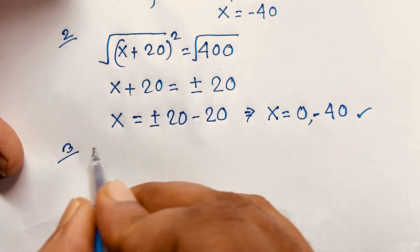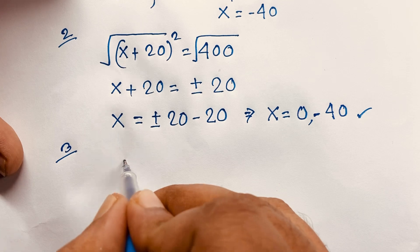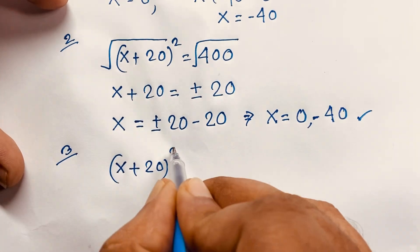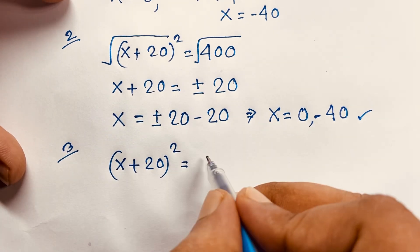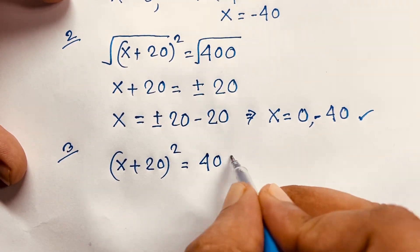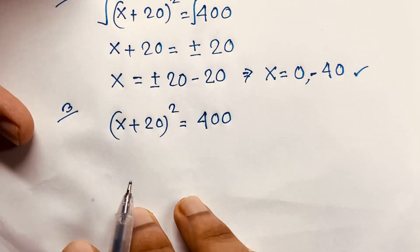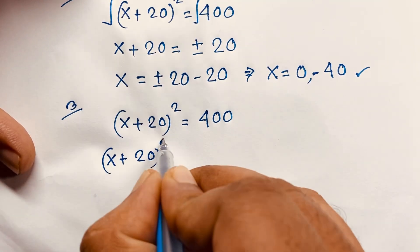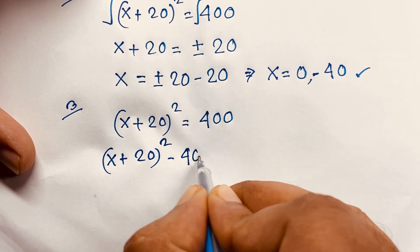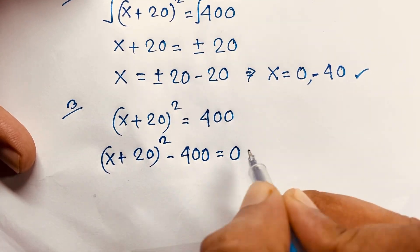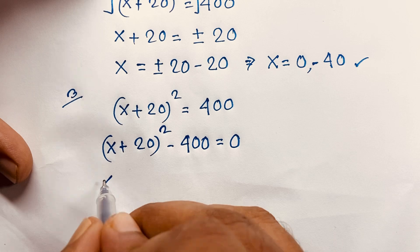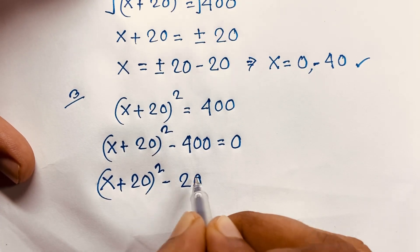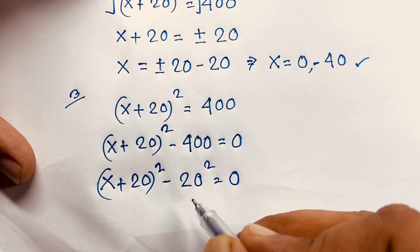Now I solve this question using another method. Our question is (x + 20)² = 400. I move 400 to this side: (x + 20)² − 400 = 0. Since 400 = 20², this becomes (x + 20)² − 20² = 0.